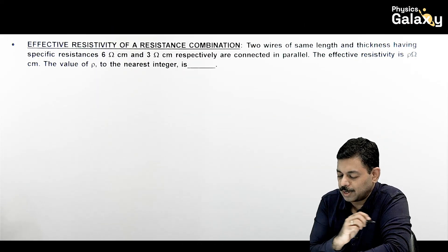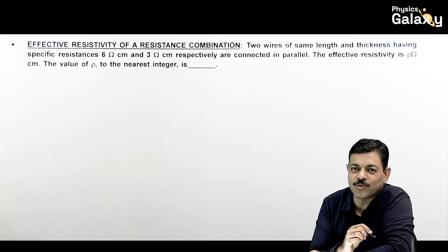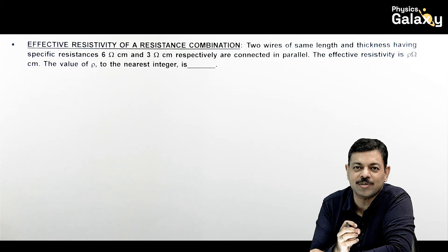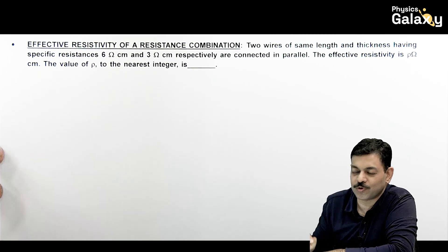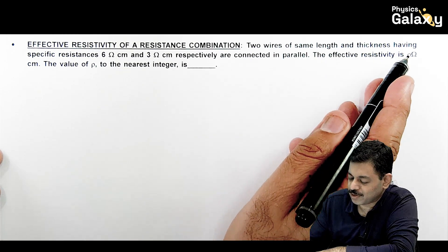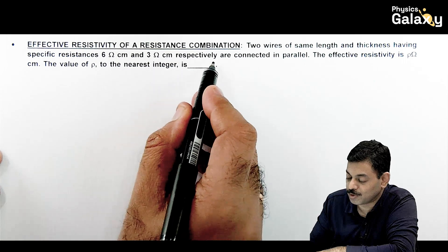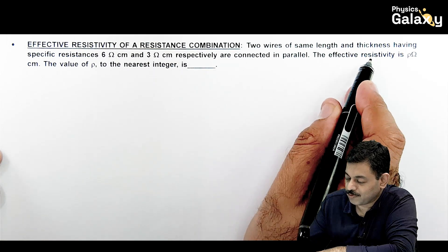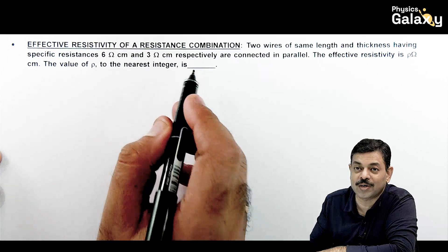Let us discuss effective resistivity — resistance combination and equivalent resistance corresponding to effective resistivity. The problem says: two wires of same length and thickness having specific resistances 6 ohm·cm and 3 ohm·cm respectively are connected in parallel, and the effective resistivity is rho ohm·cm. We want to calculate the value of rho to the nearest integer.